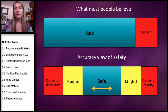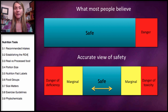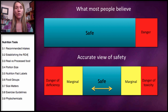How does the committee — the Dietary Reference Intake Committee — establish guidelines for our recommended daily allowances? How much of a vitamin or mineral do we need to take to make sure that we are in this safety range?